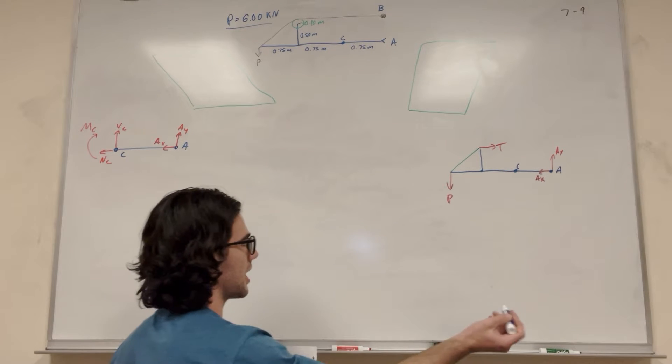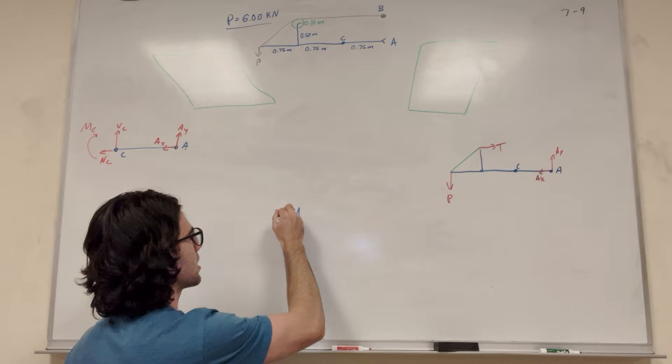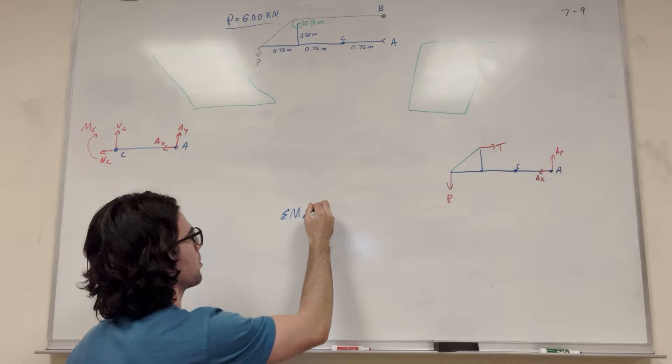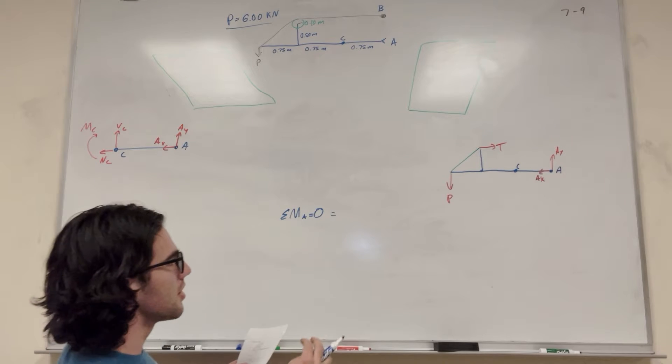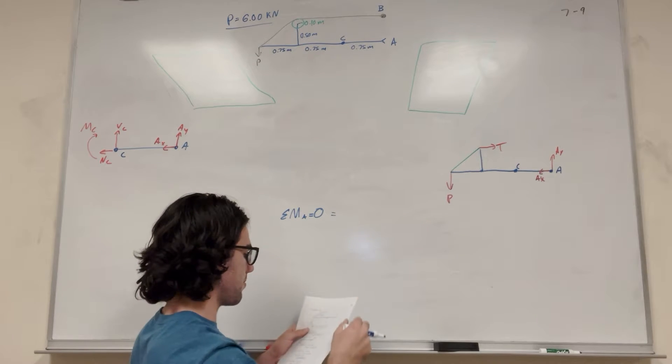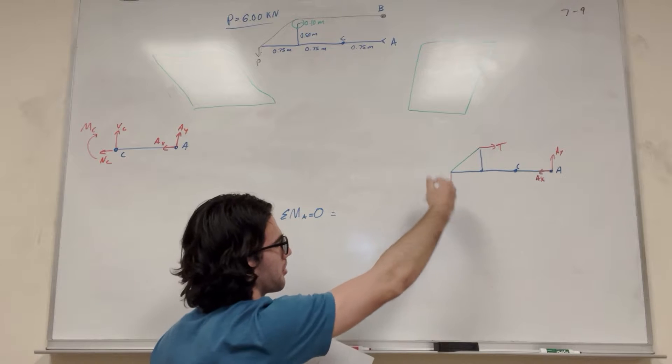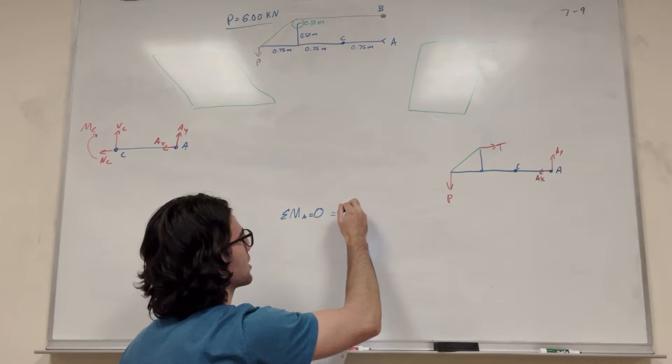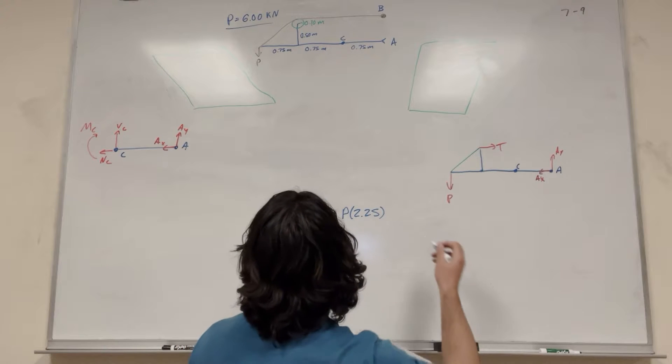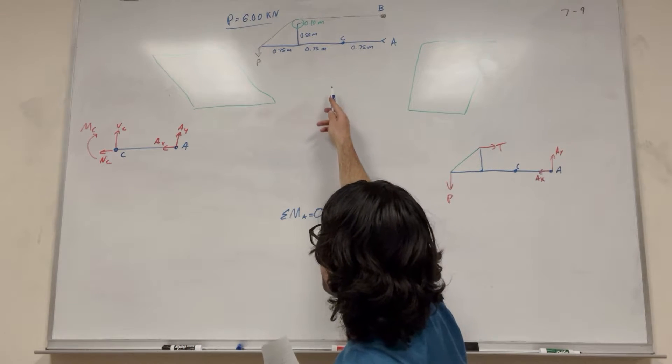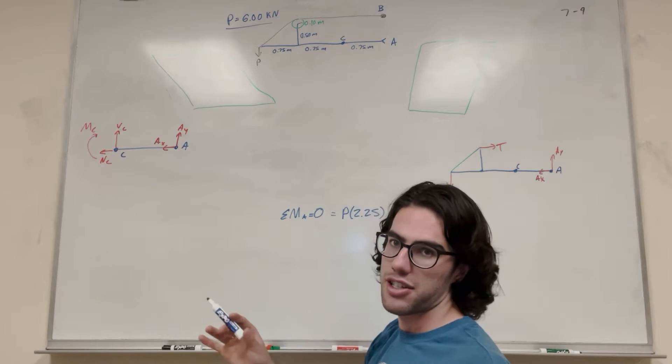So we're taking the moment of A. Sum of the moments of A. We know it's going to be equal to zero because we're at equilibrium. So let's consider, what do we have? So we have P pushes down. So P is going to push this way, which is going to make us want to go counterclockwise. So that's going to be a positive. So that's going to be P times 2.25. Now 2.25 comes from 0.75 plus 0.75 plus 0.75. That's our distance.